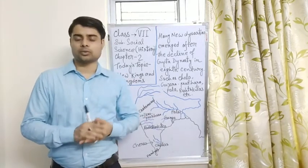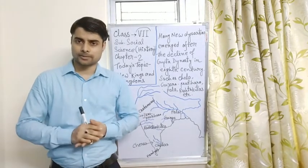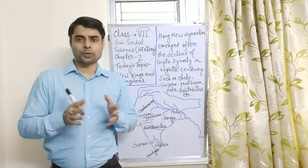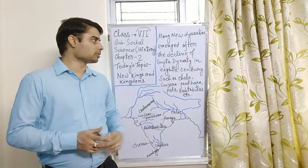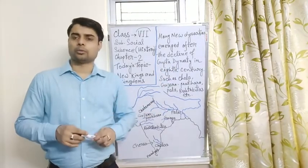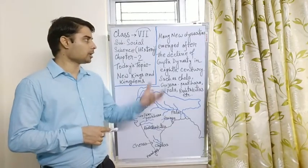Previously in class 6 we have learned how Gupta Empire established in the sub-continent. But after the decline of Gupta Empire, very new dynasties emerged in the 8th century. After the decline of Gupta dynasty, lots of small small dynasties emerged.